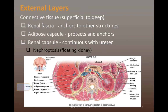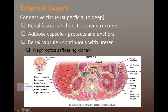Moving from superficial to deep, the kidneys are wrapped in three different layers. The most superficial is the renal fascia, a connective tissue layer that ensures the kidney does not move around inside the abdominal pelvic cavity. Just deep to the renal fascia is the adipose capsule, primarily made of fat and adipose tissue, which cushions and protects the kidneys from external trauma. The deepest layer is the renal capsule, which wraps directly around the kidney and is the last connective tissue layer before the renal cortex, the first true kidney tissue.